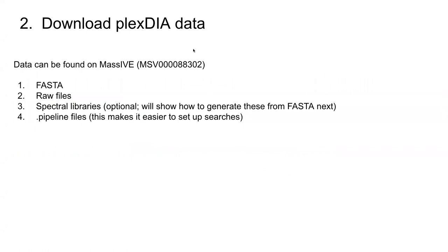Once you've done that, the next thing to do is to have some data to analyze. You can find the data that we use in our Plex DIA paper in this MassIVE repository. We have the FASTA files and the RAW files listed, and we also have spectral libraries that we generated — you can optionally download these. We're about to generate some from a FASTA. You'll also need to download the .pipeline files, which will make it easier to set up the searches.